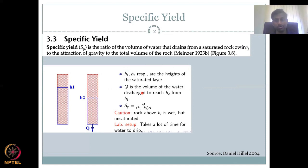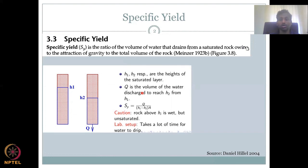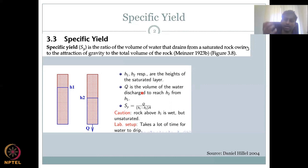Q is the volume of water which has been discharged because of gravity to reach H2, the new stable level. So specific yield is defined as Q — the volume of water that has been drained due to gravity — divided by the volume of the rock, which is H1 minus H2 multiplied by the cross section.